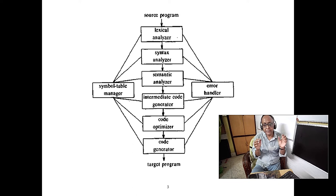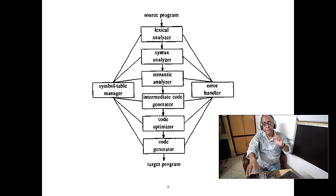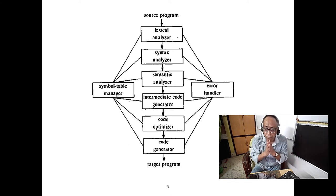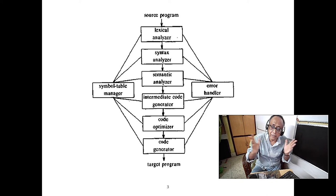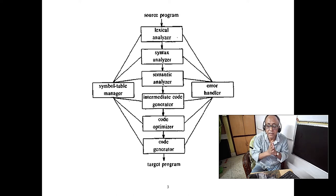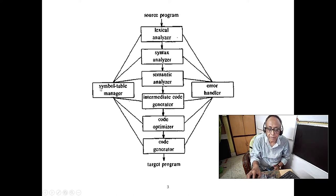What is the structure of the symbol table manager? It contains every piece of information about your program — not only variables, but integer variables, floating point variables, functions, the parameters of functions, the scope of functions — everything is in the symbol table manager.